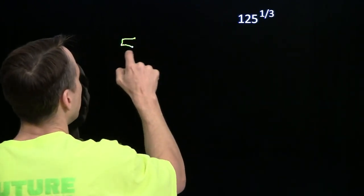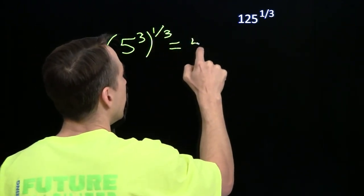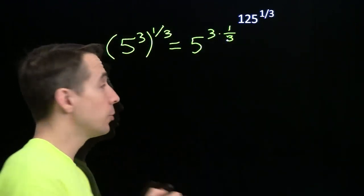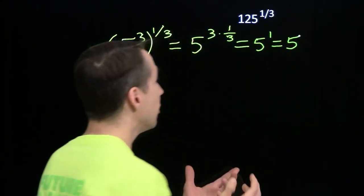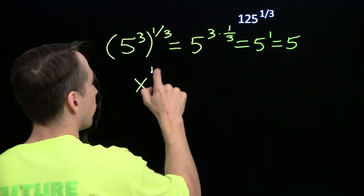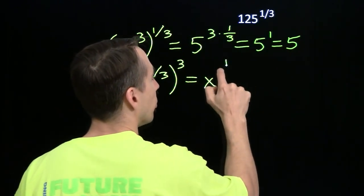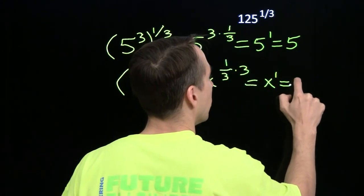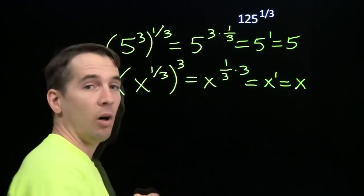125 is 5 cubed. And once again, we use one of our handy exponent rules and write this as 5 to the power 3 times 1 third. 3 times 1 third is 1. And that gives us 5. And sure enough, we can define x to the 1 third as the number we cube to get x. Let's see how that works. x to the 1 third, if we cube it, we use our exponent rules and we get x to the 1, which is x. So x to the 1 third is the number that we cube in order to get x. That's all that x to the 1 third is.